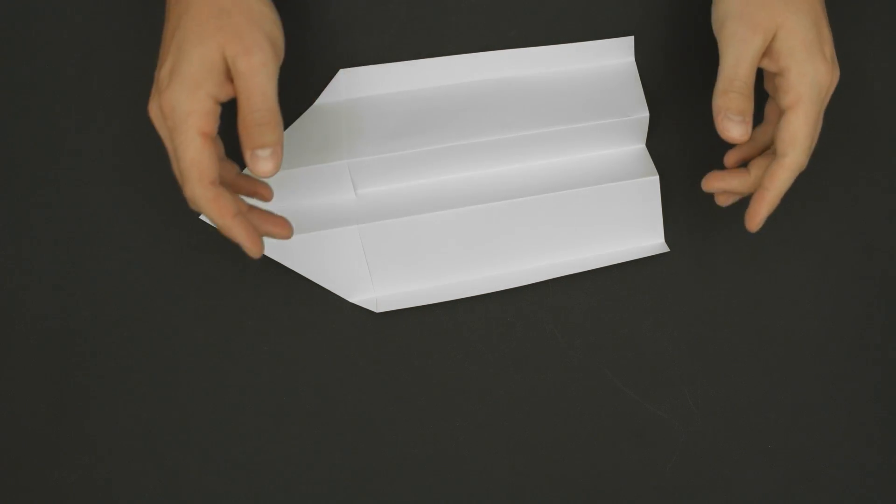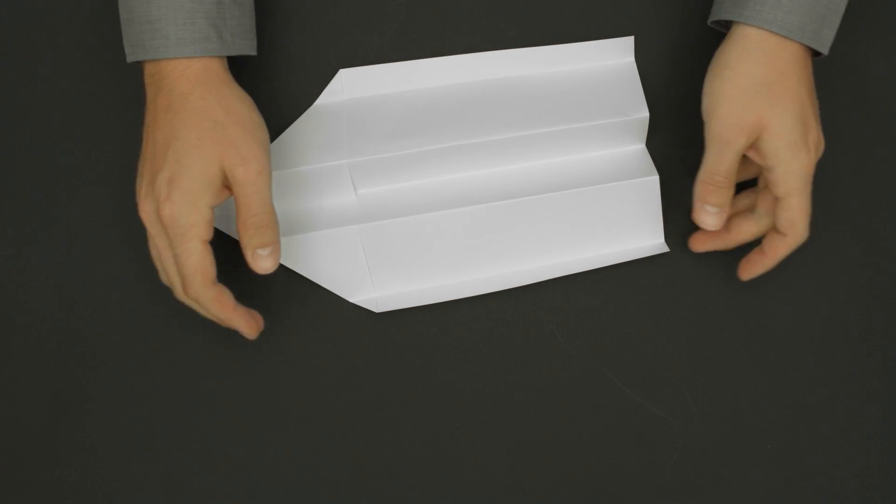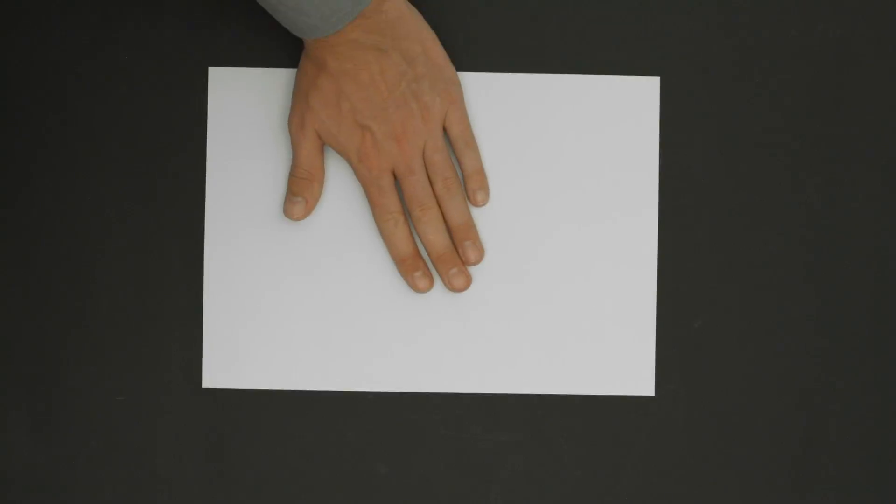This is the central hub. It knows what the plane will actually look like at the end and gives the paper and the folding instructions to the individual modules.